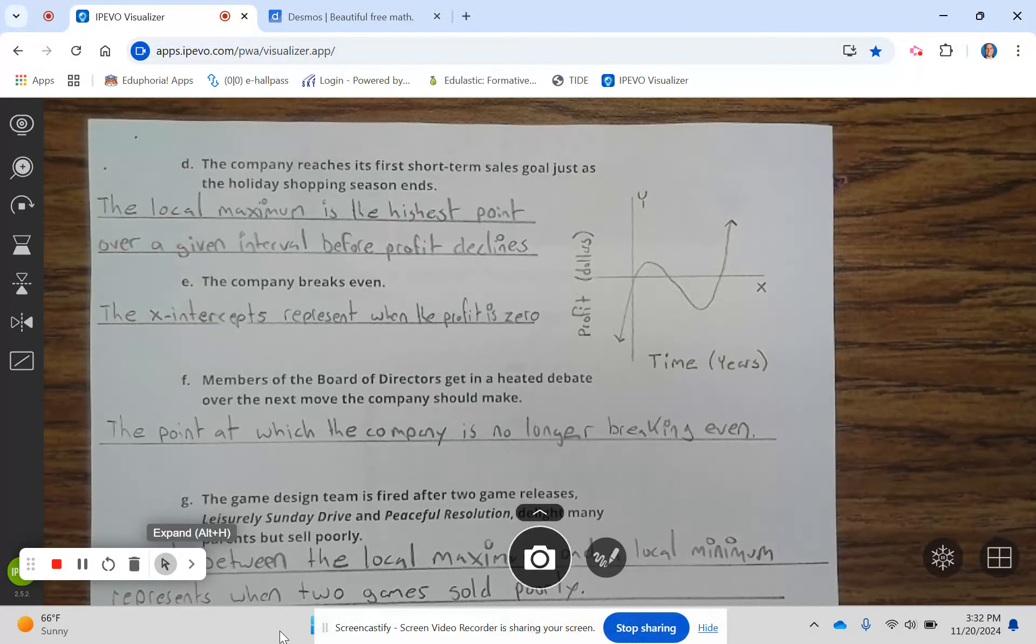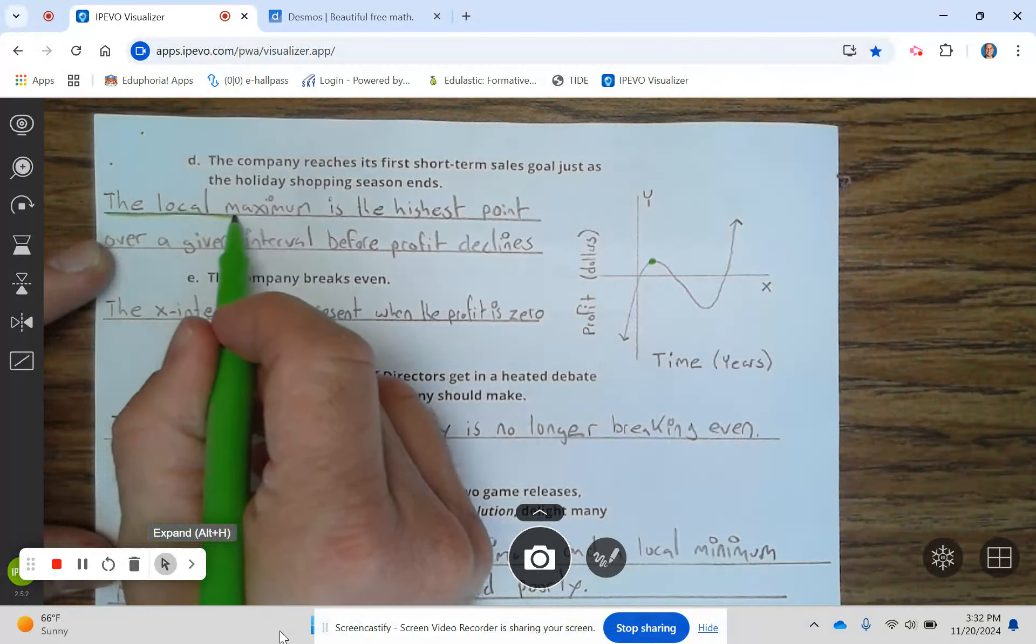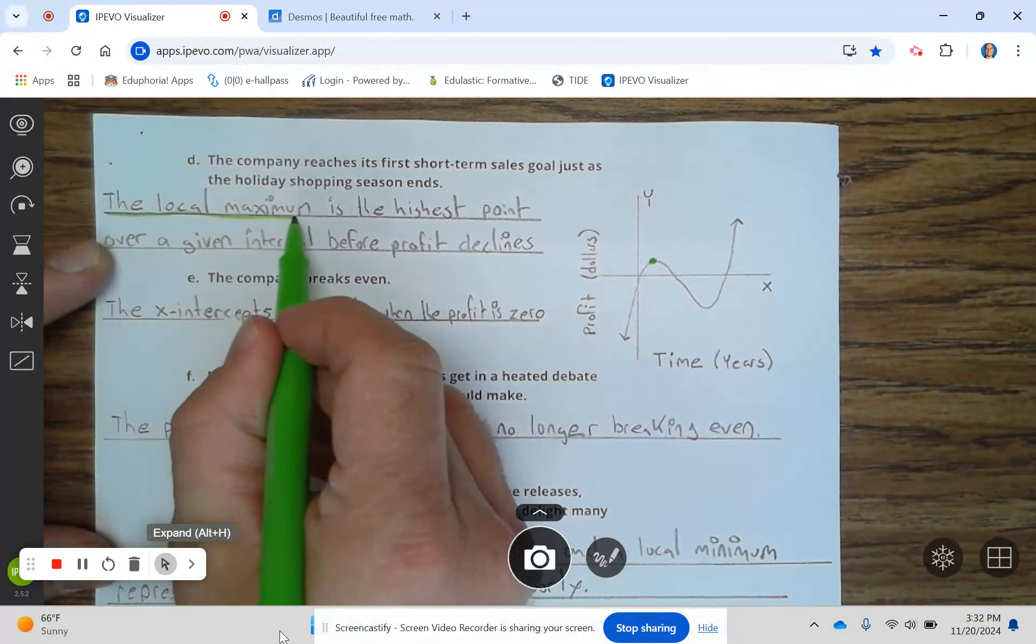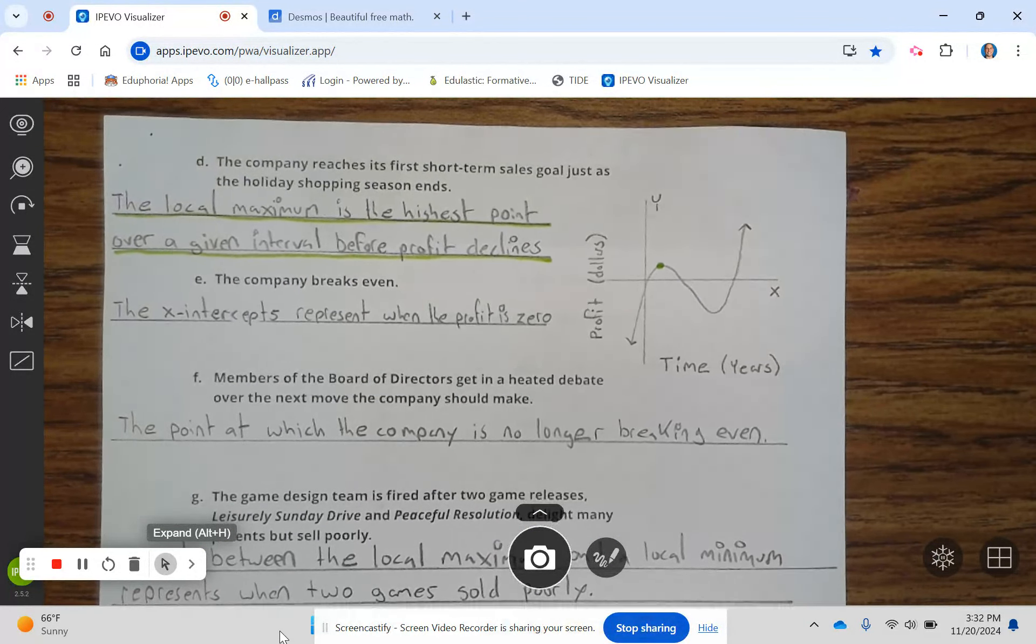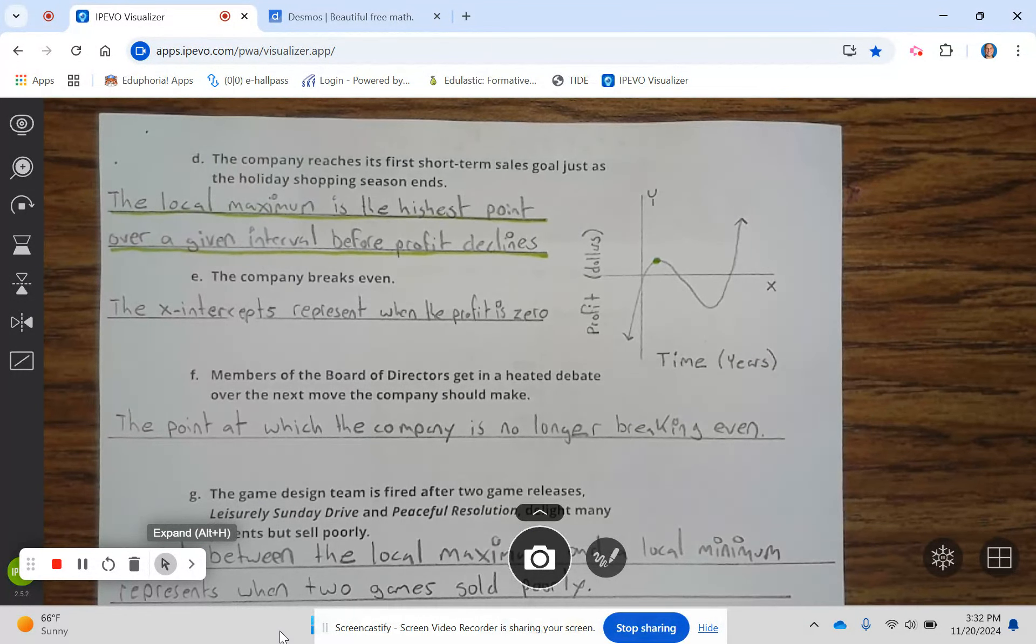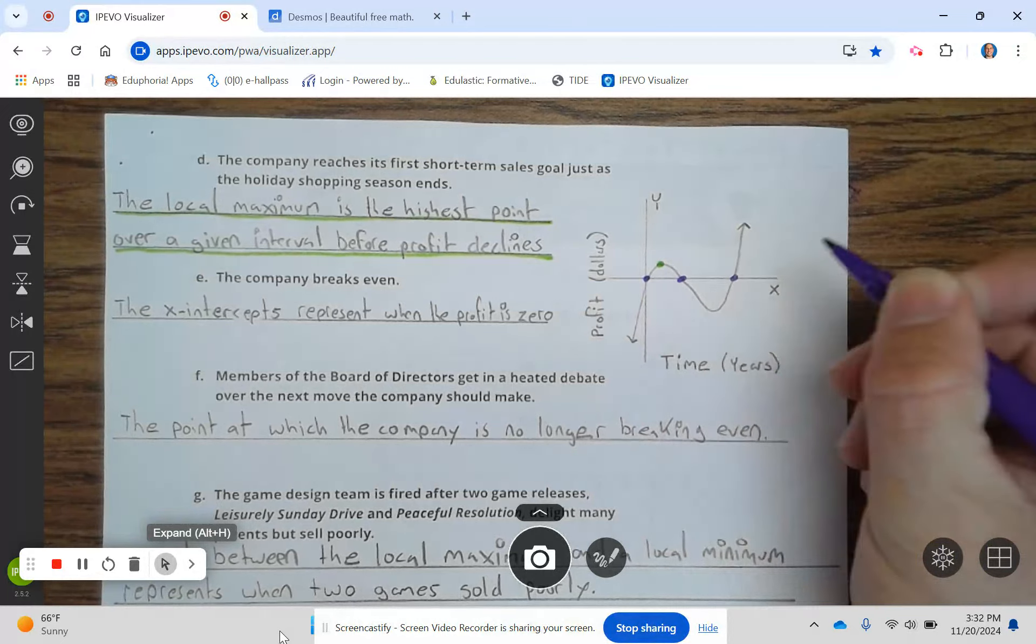D. The company reaches its first short-term sales goal just as the holiday shopping season ends. The local maximum is the highest point over a given interval before the profit declines. So that's that point right there. So that's this point, this point, and this point.